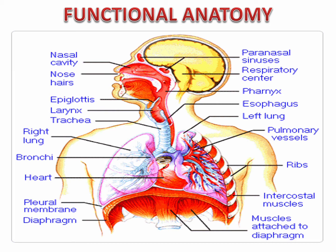Here we see the organs. In cephalocaudal order, we have the nose, the pharynx, the larynx, trachea, bronchi, smaller branches, and the lungs which contain the alveoli. Please take note of the diaphragm in the photo, just below the lungs. The diaphragm is a structure which actually divides the respiratory organs and the digestive organs.